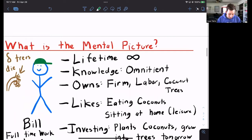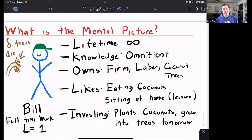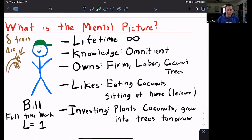So what is the mental picture of this world? We're going to have one representative agent, and that's going to be, no surprise, our man Bill. Bill is still going to live forever. He still knows everything, just like we've seen in previous models. We're going to say that he owns his own firm. He owns his own labor, and he owns the coconut trees or the capital from the production function. What does Bill like to do? He still likes to eat coconuts, just like we've seen before.